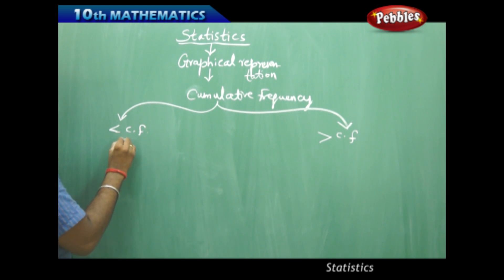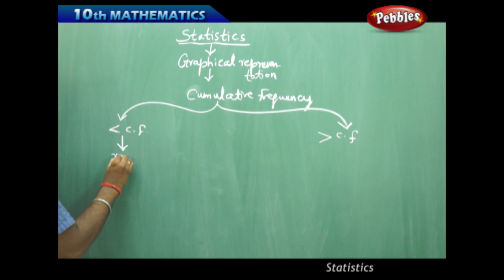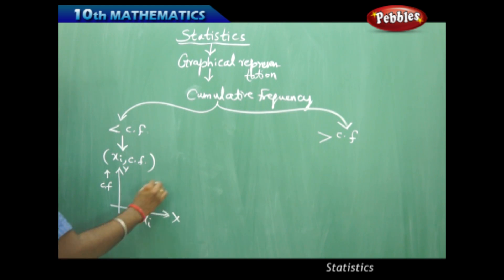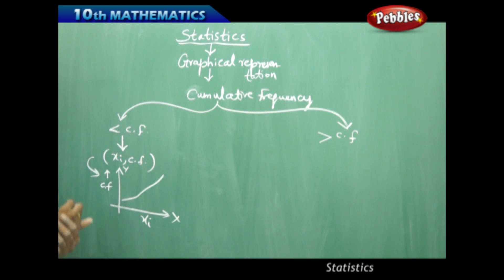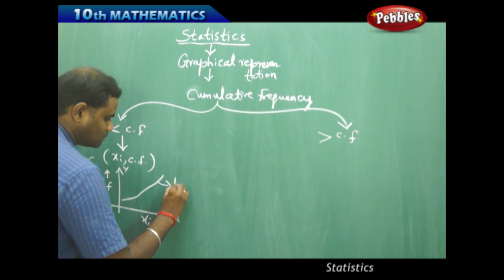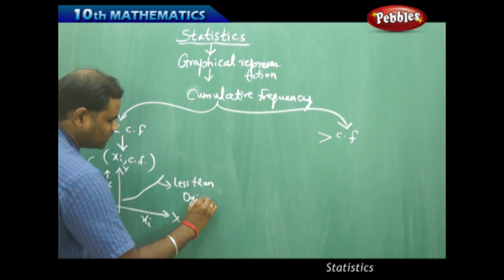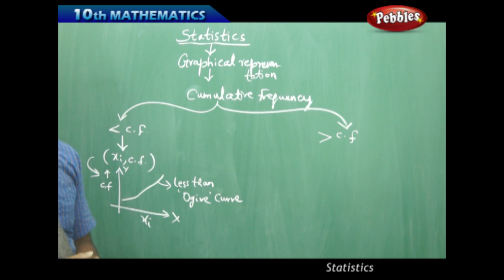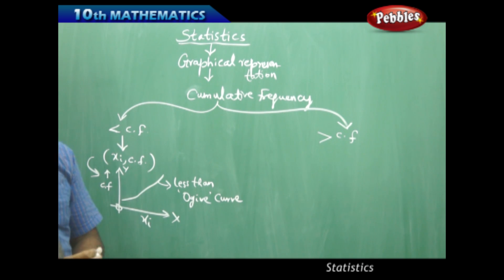In less than cumulative frequency, we observe that the values increase. When I plot between the mid values or class interval values on the x-axis and the cumulative frequency on the y-axis, I get a curve which is increasing. This is called a less than or ogive curve — the term 'ogive' derived from historical mathematical terminology. When I plot between xi and cumulative frequency, I get a less than ogive curve.